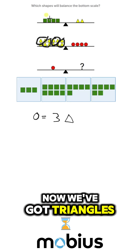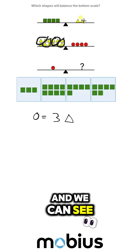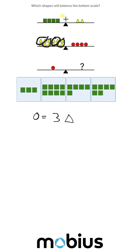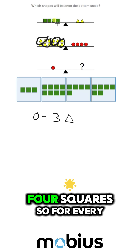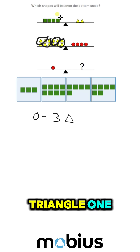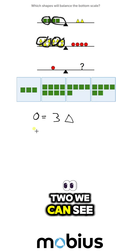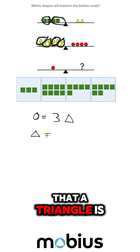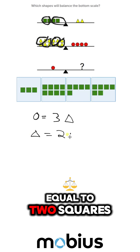Now we've got triangles in terms of squares, and we can see two squares, two triangles, four squares. So for every triangle, one, two — you can see that a triangle is equal to two squares.